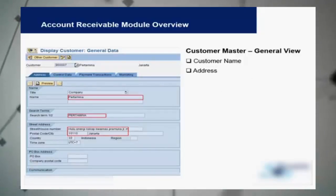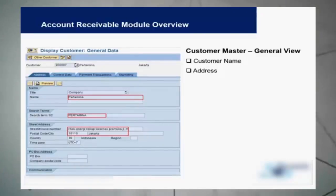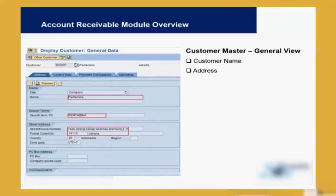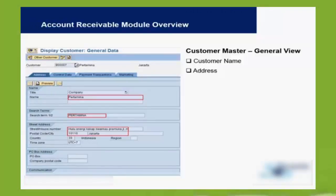This is how the general data first screen looks — it's very similar to vendors. You will see the name of the customer and the address of the customer displayed on the screen.